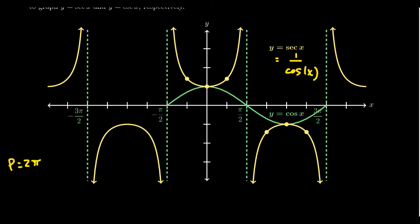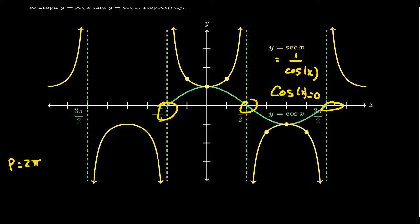Like tangent and cotangent, the graph of secant has vertical asymptotes — places in the domain where secant is undefined. The location of the vertical asymptotes of secant are identical to those of tangent, because tangent is sine over cosine and secant is 1 over cosine. Both have cosine as their denominator — that's why they're BFFs, best friends forever. Secant will be undefined whenever cosine equals 0, which happens at π/2, 3π/2, 5π/2, negative π/2, negative 3π/2 — any odd multiple of π/2.